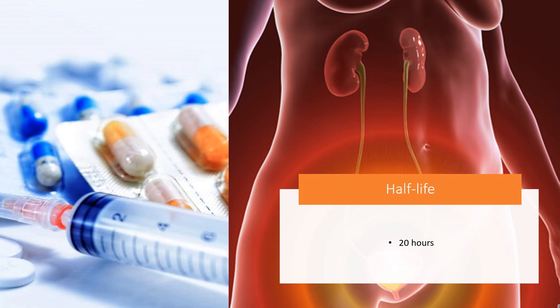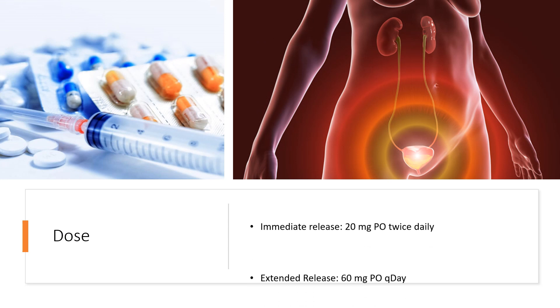Half-life: 20 hours. Dose for overactive bladder: Immediate release, 20 mg PO twice daily. Extended release, 60 mg PO once daily.